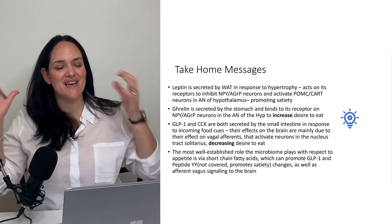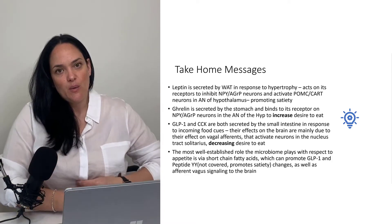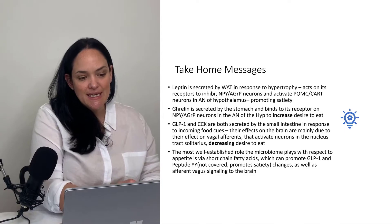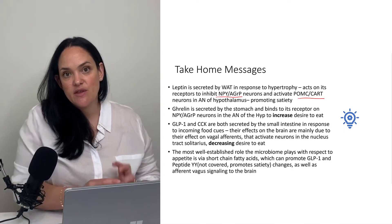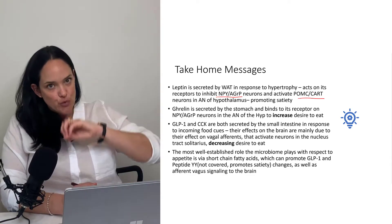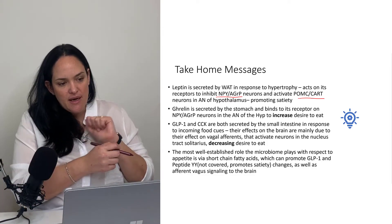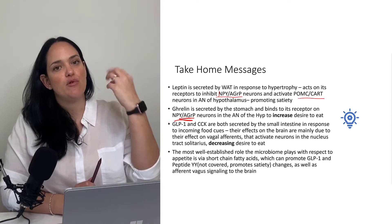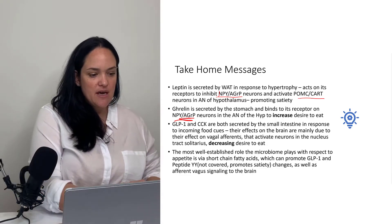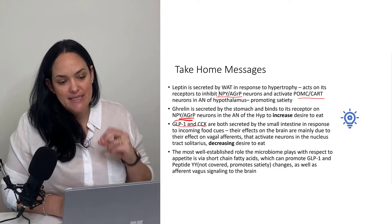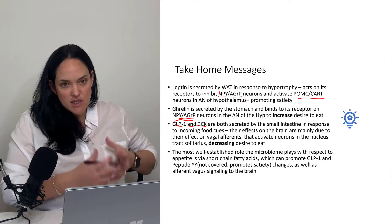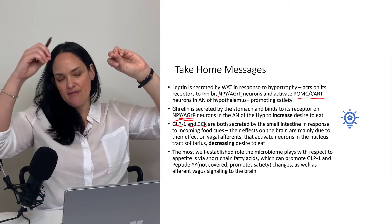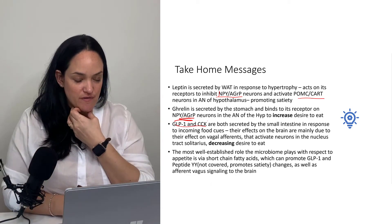Putting this whole unit together, some basic messages: we know that leptin is secreted by white adipose tissue in response to its expansion, and that leptin can inhibit the NPY-AGRP neurons and activate the satiety-inducing POMC-CART neurons, leading to an overall satiety effect. Ghrelin does the opposite — it works on the NPY-AGRP pathway, stimulating it and promoting that orexigenic, or appetite-increasing, effect. GLP-1 and CCK are both secreted by intestinal cells in response to food entering the small intestine, and they act via both an endocrine pathway and a vagal pathway toward the hypothalamus to affect eating behavior.